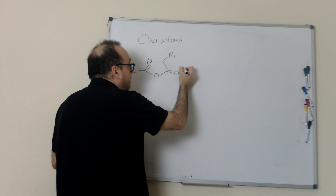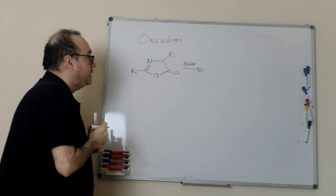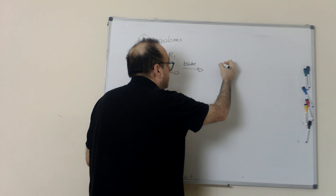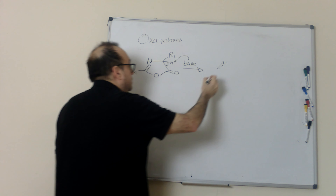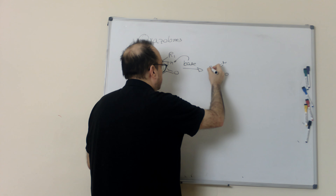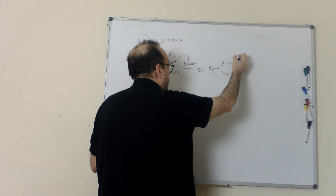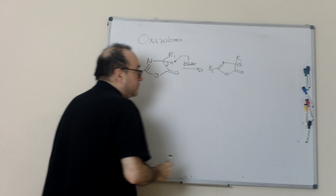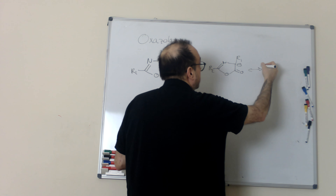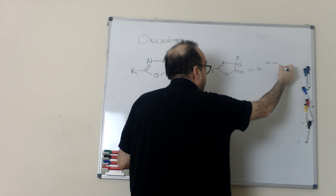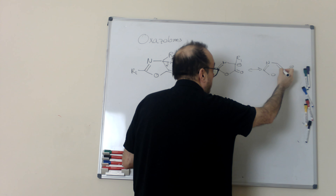In this form, Oxazolones are not aromatic, because this carbon is SP3. But when we form the conjugate base — we add a base and remove this hydrogen — what we get is a species that is in equilibrium with its resonance form, and we can draw it like this.